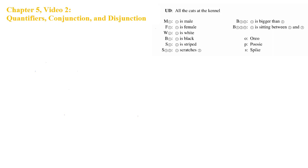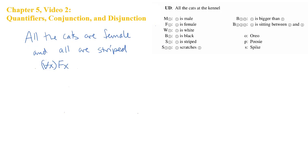Here is the first in a series of examples. All the cats are female and all are striped. If we follow the pattern in the English exactly, we'll wind up with a conjunction of two universal claims: all x Fx — everything is female — and all x Sx — all of them are striped.